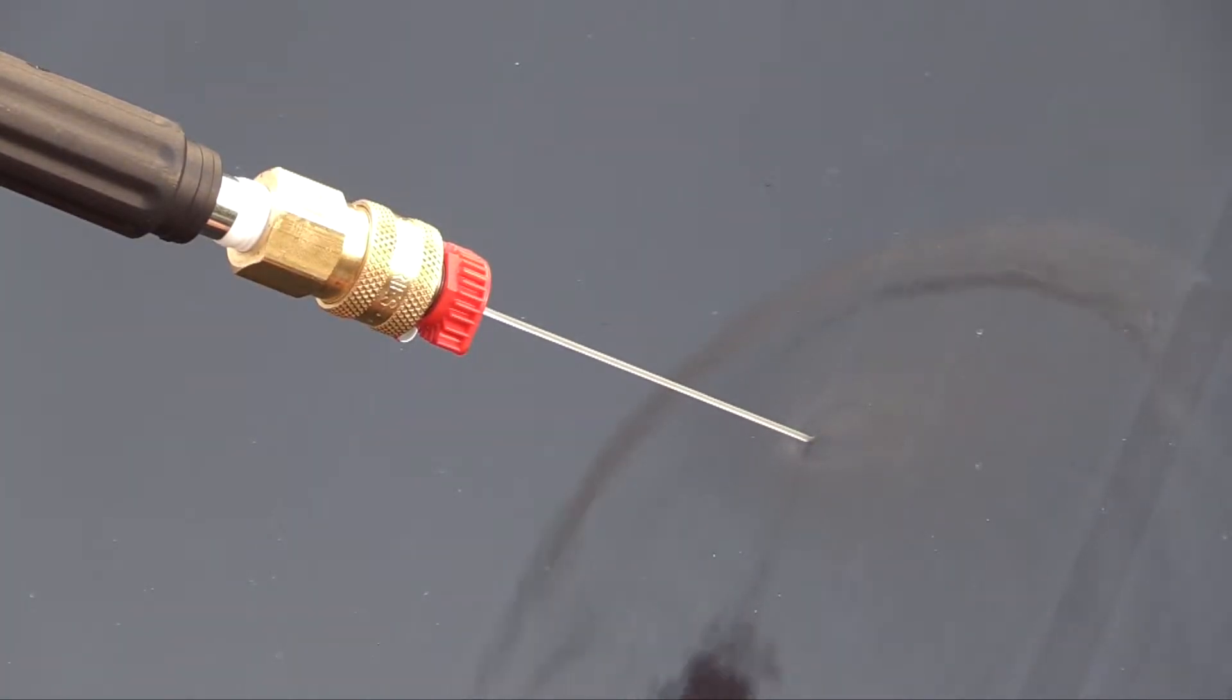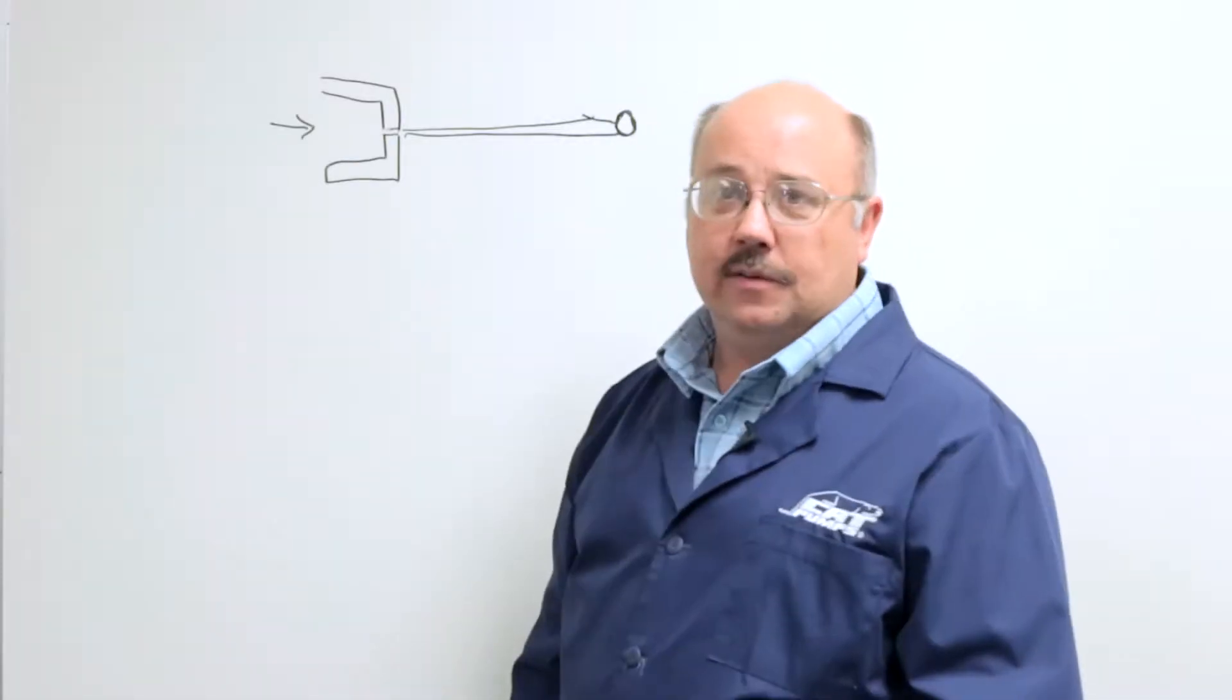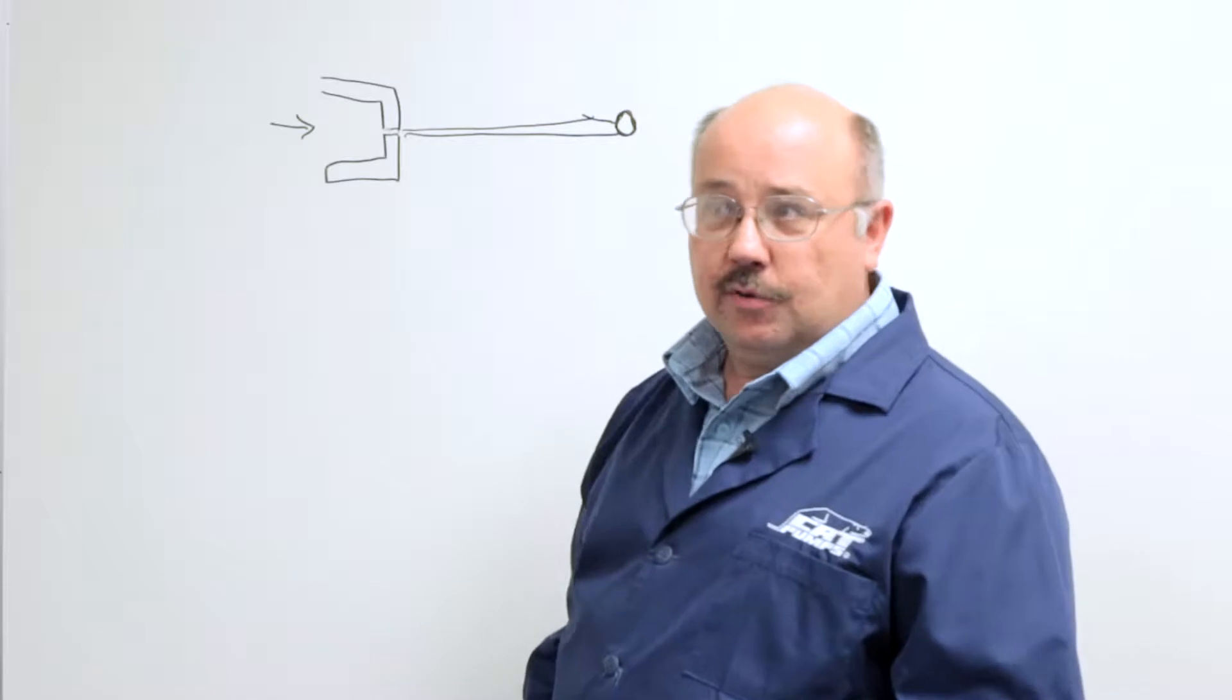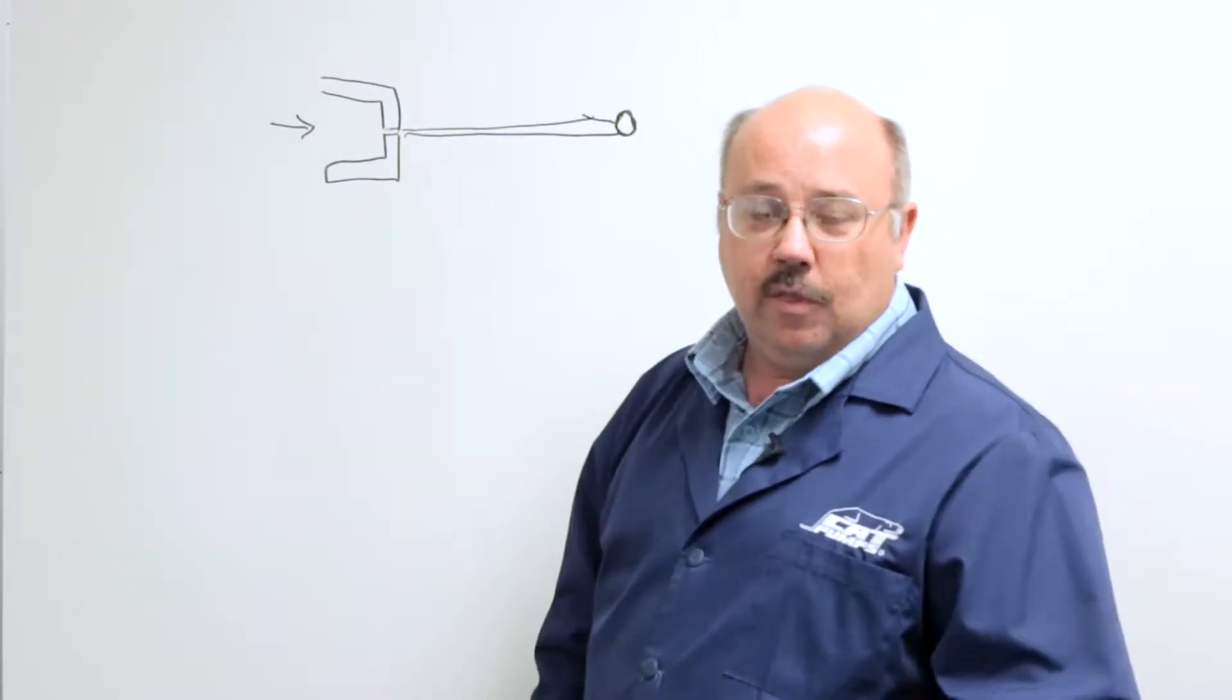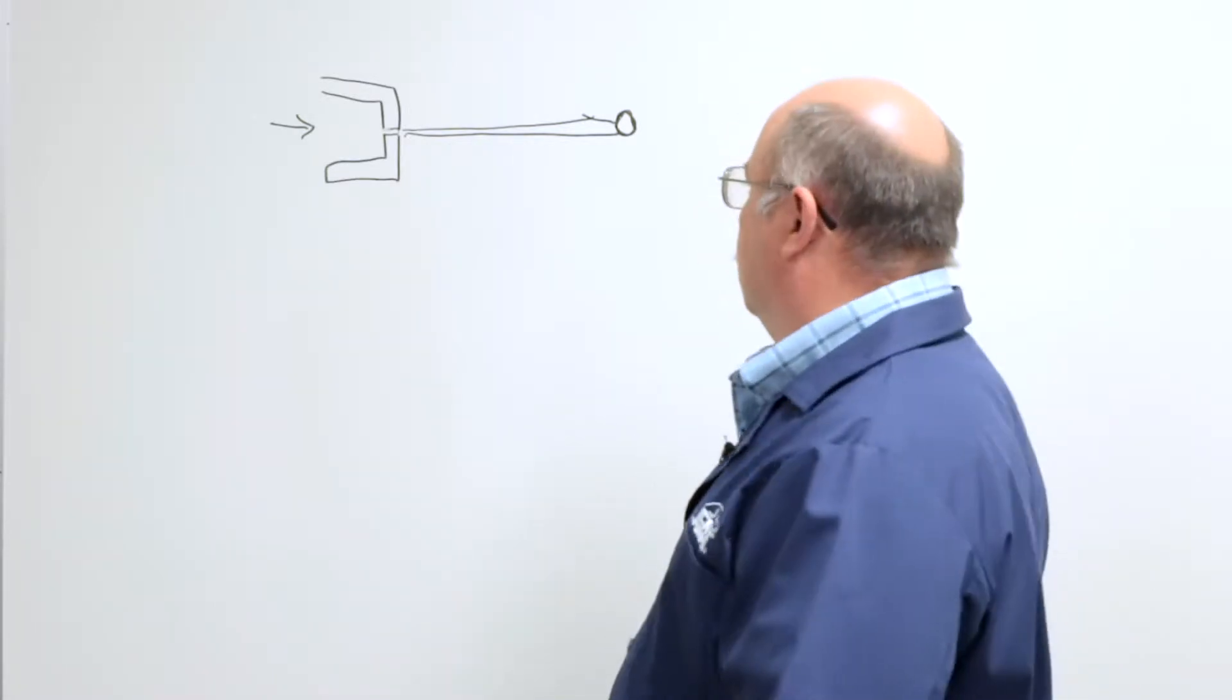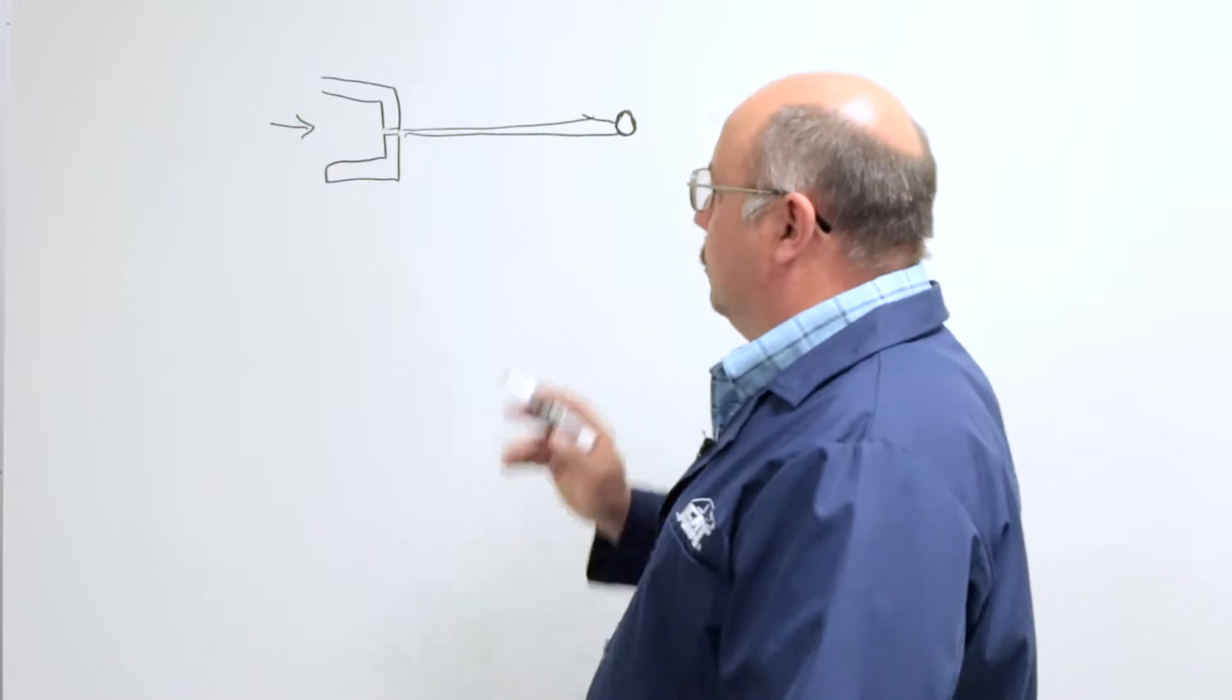This is called a zero degree nozzle, and it impacts the surface with the most force of any type of nozzle. It can do damage if the pressure is too high. And so we use that for aggressive cleaning, whether it be graffiti or just caked in dirt, that's what you would use those nozzles for.